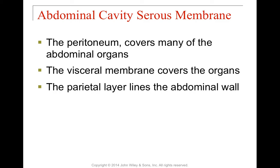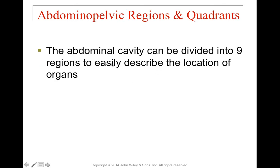Inside the abdominal cavity, the peritoneum surrounds all abdominal organs — the visceral membrane covers the organs themselves, and the parietal membrane lines the abdominal wall. The abdominal cavity can be divided into nine different regions to help locate and describe the position of organs fairly easily.